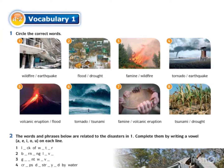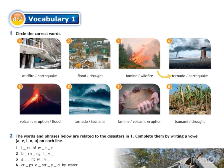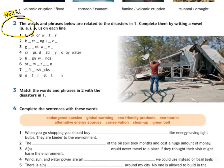Let's go through all the words. Wildfire — kebakaran hutan. Earthquake — gempa bumi. Flood — banjir. Drought — kemarau. Famine — kebuluran. Tornado — puting beliung. Volcanic eruption — letusan gunung berapi. Tsunami — tsunami.